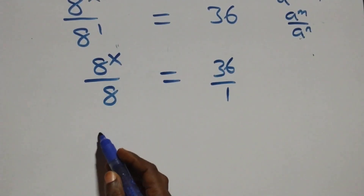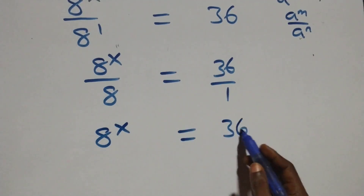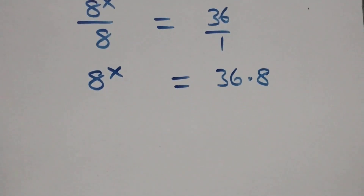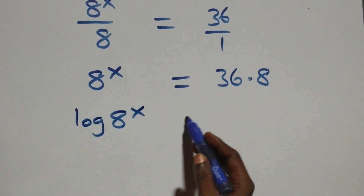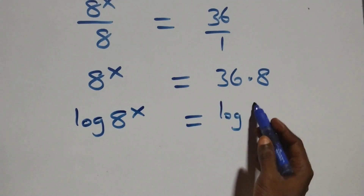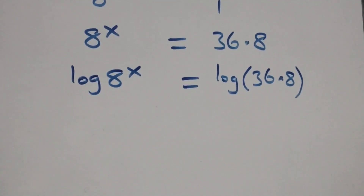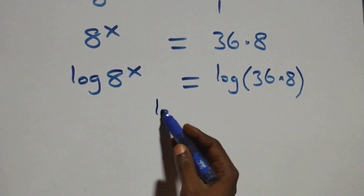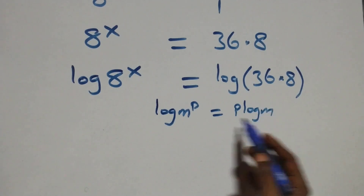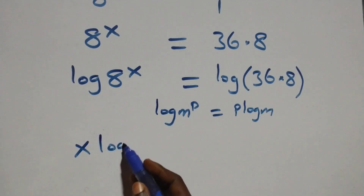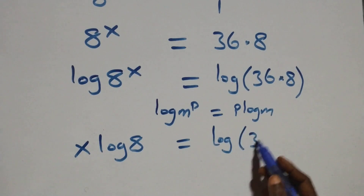The next step: we cross multiply, giving 8 raised to power x times 1, which is the same as 8 raised to power x, equals 36 times 8. Then we take the log on both sides: log of 8 raised to power x equals log of 36 times 8. We apply the power rule of logarithms — log m raised to power p is the same as p log m — so x log 8 equals log of 36 times 8.